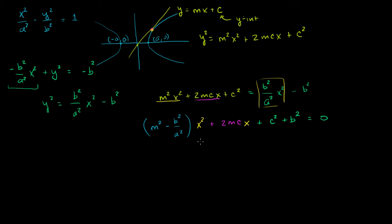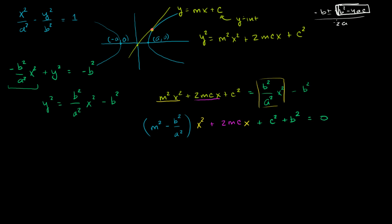In order for this quadratic to have only one solution, its discriminant must equal zero. Recall the quadratic formula: x = (−B ± √(B² − 4AC)) / 2A. You only get one solution when B² − 4AC = 0, giving x = −B / 2A. For the tangent line, there can only be one x satisfying this equation, so the discriminant B² − 4AC must equal zero.